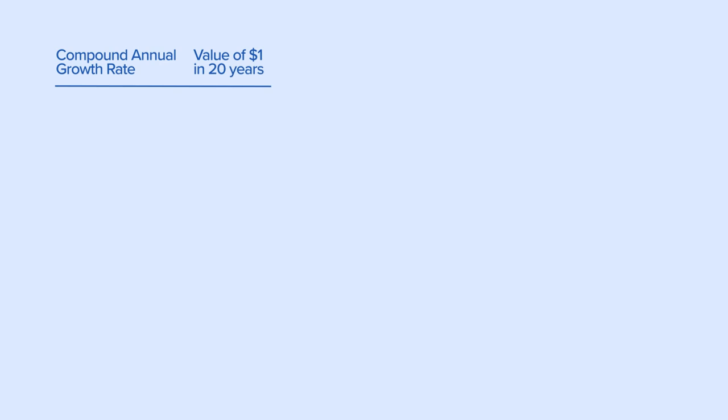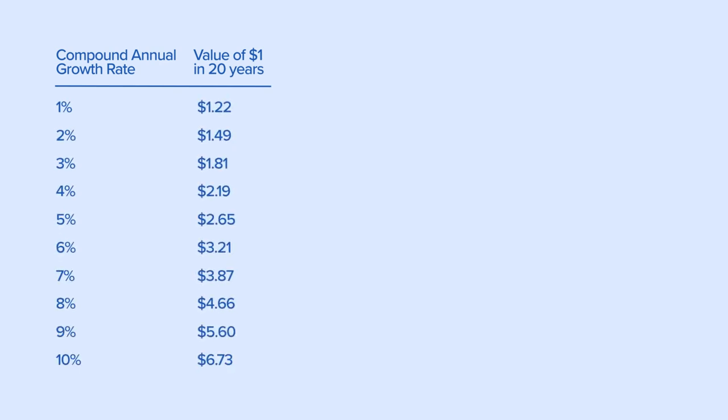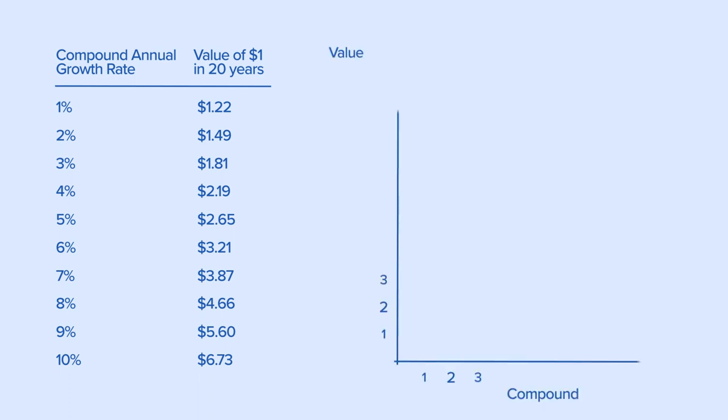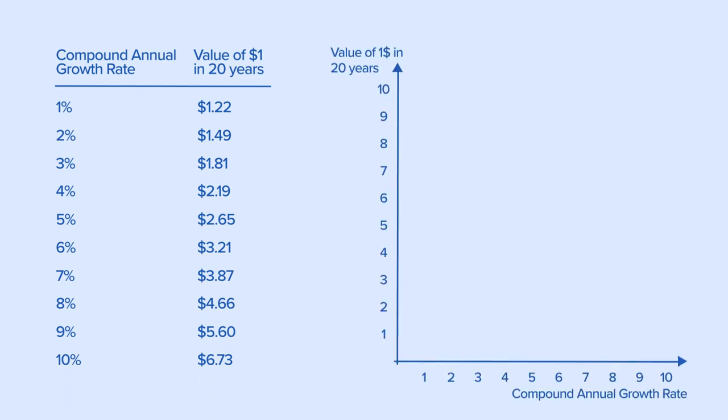This table shows the future value of $1 in 20 years based on annual compounding rates ranging from 1% to 10%. Here is a chart that illustrates the relationship.